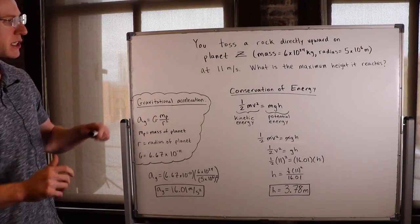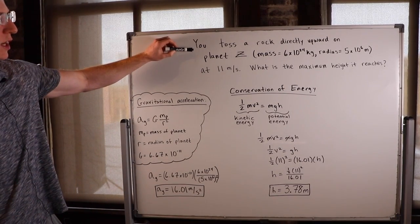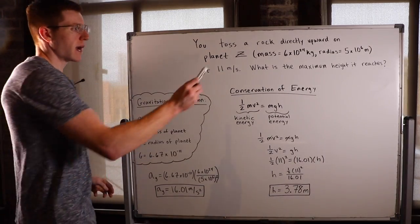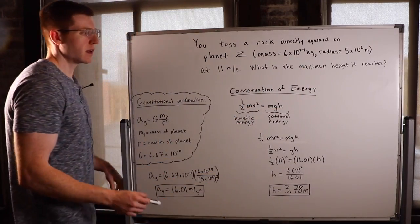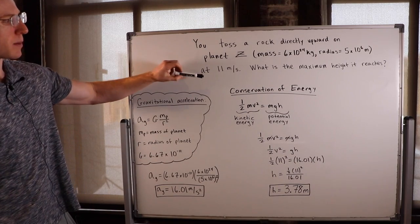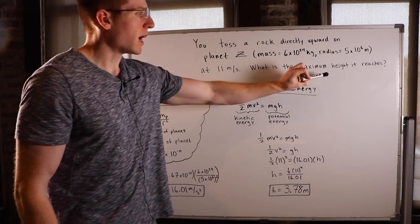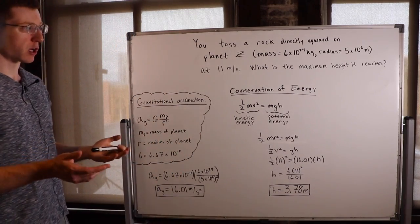Hey guys, I've got a problem here. I say you toss a rock directly upward on another planet, let's call it planet Z, and I give you the mass and the radius of that planet, and I say you toss this rock up at 11 meters per second. And then I want to know what is the maximum height that that rock reaches before it falls back down.